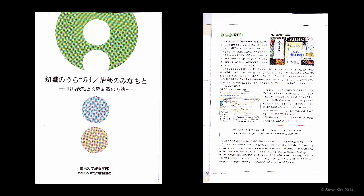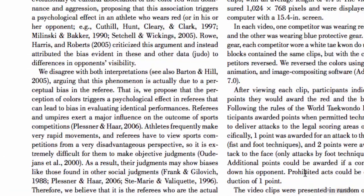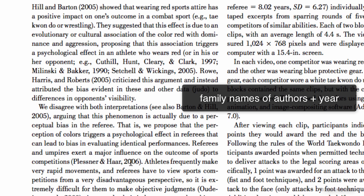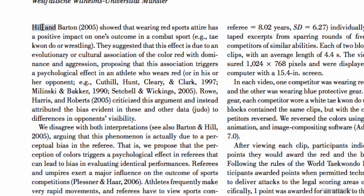You can use the book I gave you in class to find out how to do these references, and I also have another video that explains how to do this in Word. There are two ways you can put citations in your paper. One is to state the point and then put the family names of the authors and the year in parentheses at the end. The other way is if you use the names of the researchers in the sentence — like 'Hill and Barton showed that wearing red sports attire' — then you just put the year in parentheses after the name.